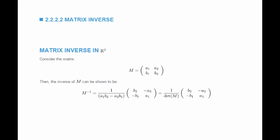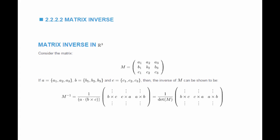The matrix inverse in R^2 can easily be found using the following formula: M^{-1} is equal to 1 divided by the determinant of M, multiplied by the matrix [d, -b; -c, a]. A 3 by 3 matrix inverse can be shown to be 1 over the determinant of M — which is a dot (b cross c) — and the three columns are: the first column is b cross c, the second column is c cross a, and the third column is a cross b, where a, b, and c are the rows of M.